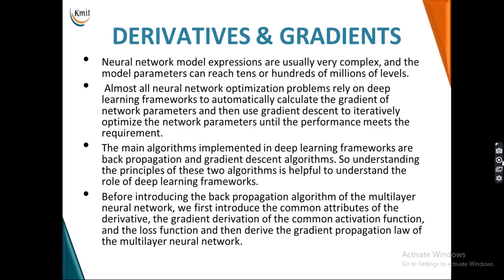Neural network model expressions are very complex and there are millions of model parameters. Whenever you are trying for optimization, you always rely on deep learning frameworks like TensorFlow. These frameworks automatically calculate the gradients of the network parameters using gradient descent algorithm iteratively, helping you find optimized values of your network parameters. The main algorithms implemented in these frameworks are back propagation and gradient descent.